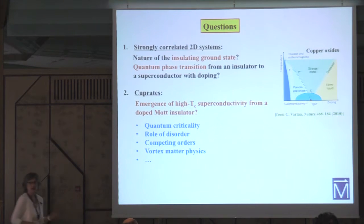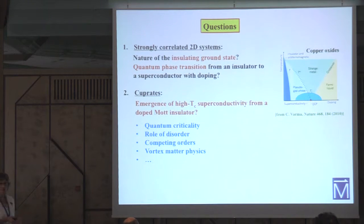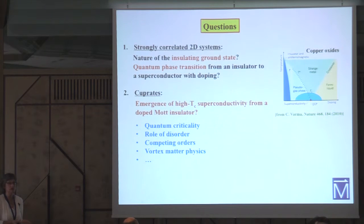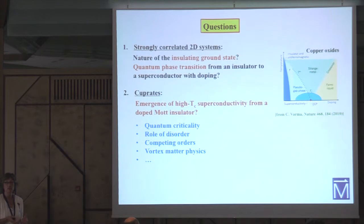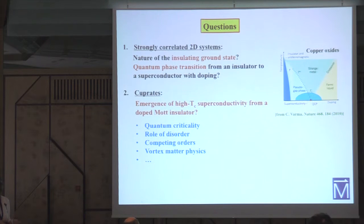The main questions we would like to understand are the nature of the insulating ground state at low carrier densities in strongly correlated two-dimensional systems, and the behavior near the quantum phase transition from that insulating state to a conducting state — a metal or a superconductor — as a function of doping.